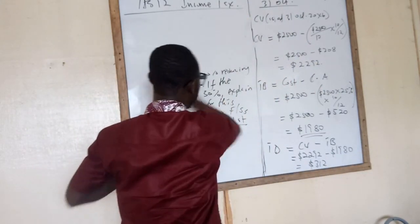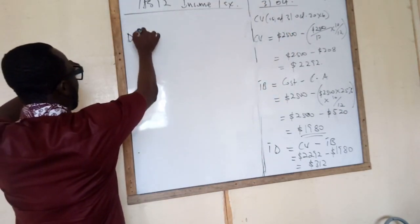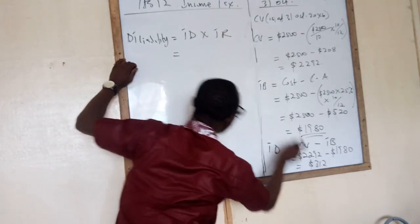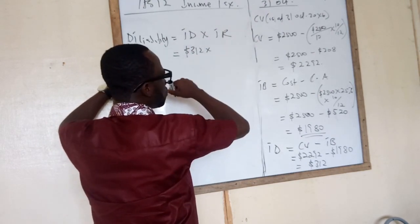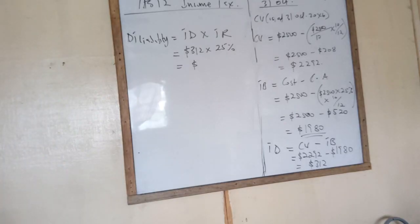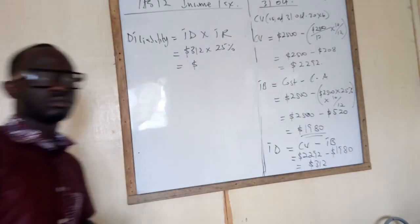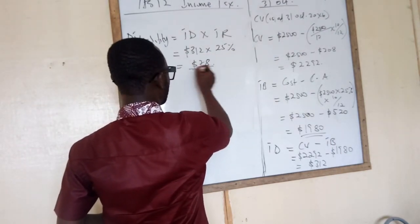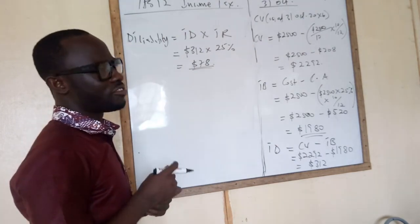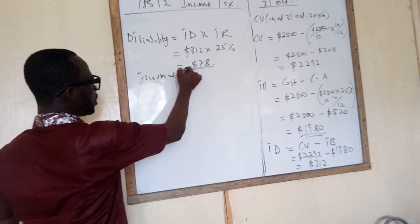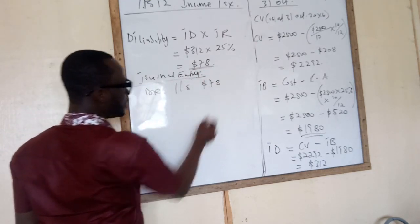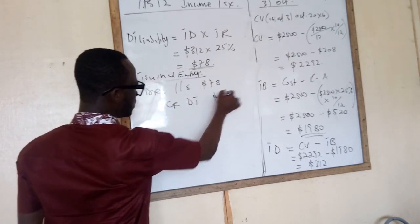So this is going to lead to a deferred tax liability. The deferred tax liability will be equal to the temporary difference times the tax rate: 312 times 25%. What do we have? 78. So this $78 is the deferred tax for the year. The double entry for this is: debit the income statement with 78 and credit the deferred tax liability with 78. This is presented in the balance sheet.